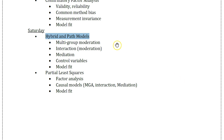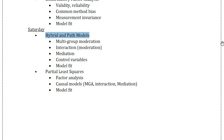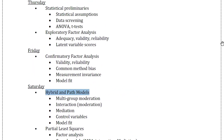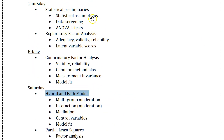On Saturday, whatever we don't get to on Friday we'll finish, and then we'll also talk about partial least squares using SmartPLS 3. Don't worry if you don't have a license — I'll get you a temporary license with full features just for this conference, lasting somewhere between 30 and 60 days. We'll be using AMOS and SPSS: SPSS for everything on Thursday, AMOS for Friday and a bit of Saturday, and SmartPLS for the remainder.